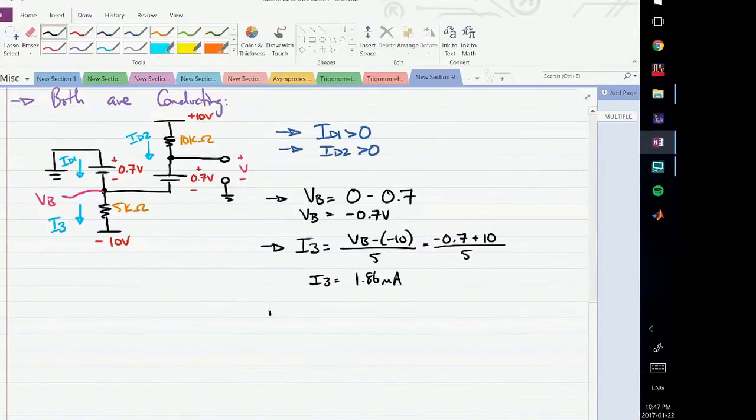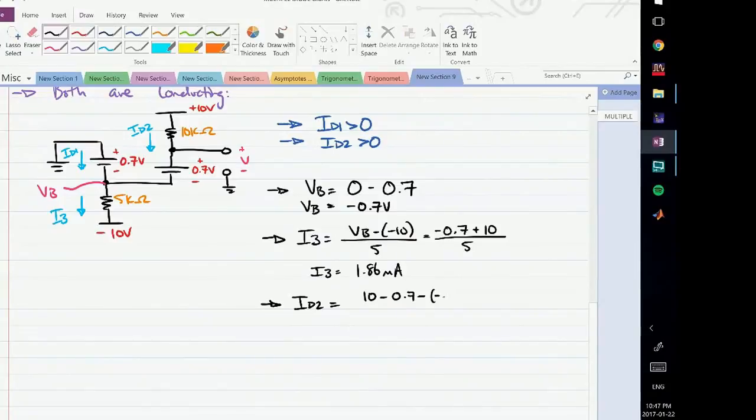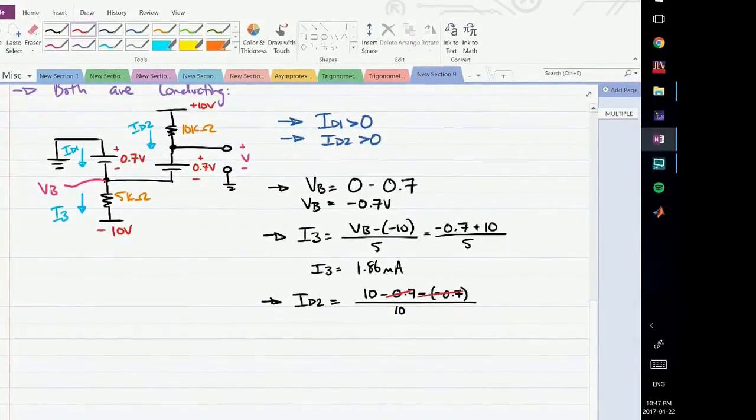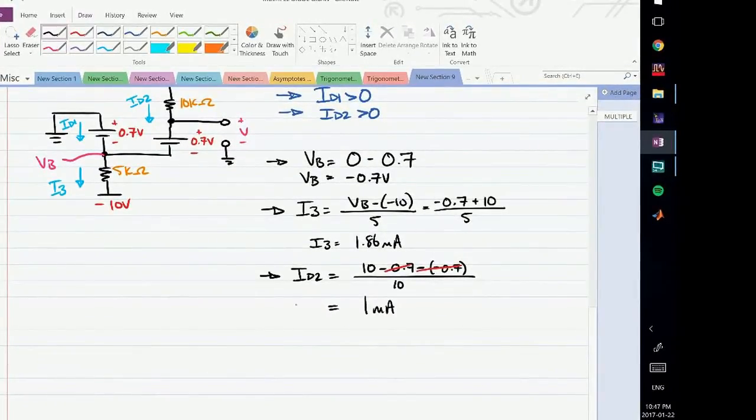So now I have I3. I can also find I2 now. I say 10 minus this voltage drop minus VB, which is the other voltage drop, divided by 10, and that gives me I2. So I2 is 10 minus 0.7, which is the voltage drop due to this diode, minus VB. VB is minus 0.7, divided by 10. This is convenient - we have minus 0.7 and minus minus turns into plus 0.7. So this is simply 10 over 10, which is 1 milliamp. This is I2.